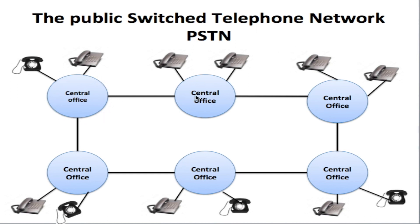These central offices are all connected together by a cable, and there are switches located within these central offices. So if you want to make a telephone call from one phone to another, it will be able to connect those two phones. If you want to make a phone call across multiple central offices, that would be the key example of circuit switching — it will activate a switch to the trunk cable.